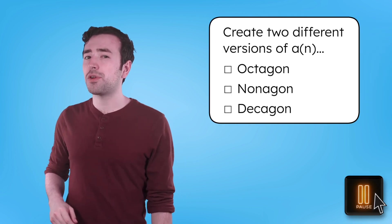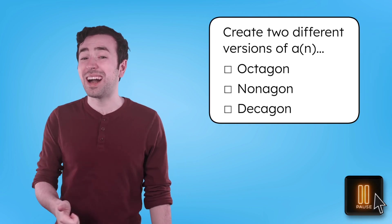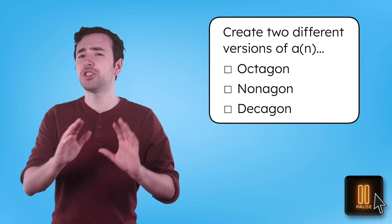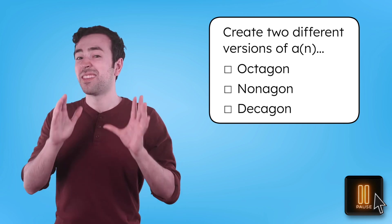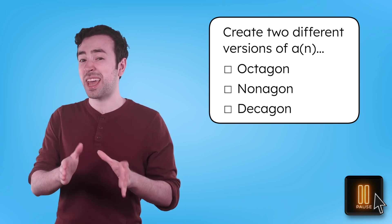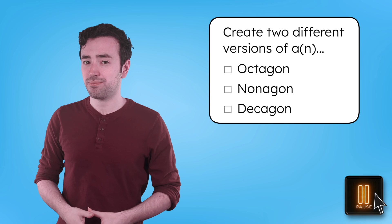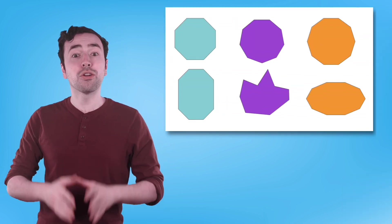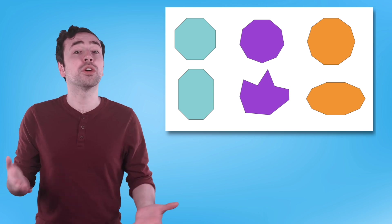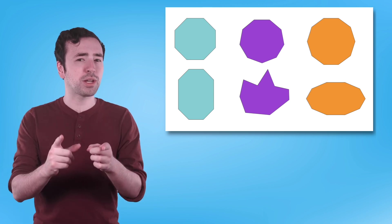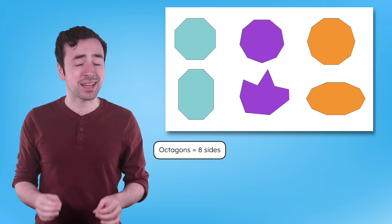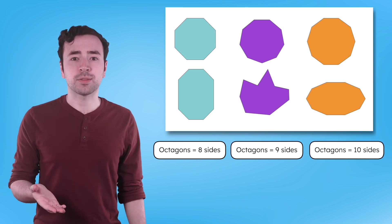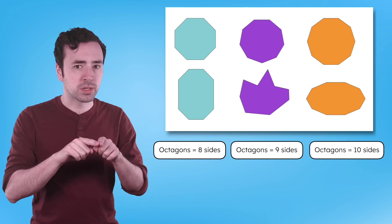Pause the video here and try creating two different versions of an octagon, a nonagon, and a decagon. Try changing the lengths of their sides and the size of the angles. There are lots of possibilities — just make sure your octagons each have eight sides, your nonagons have nine sides, and your decagons have ten sides, and that they're all closed shapes.